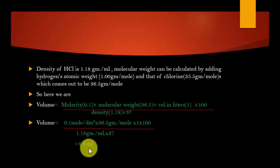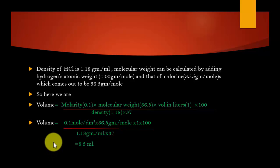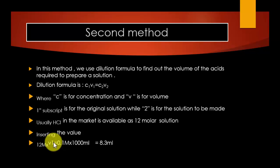This 8.3 mL has to be taken and added to a one-liter volumetric flask, and then enough distilled water is added to make it 1000 mL. This will be our 0.1 molar HCl solution.